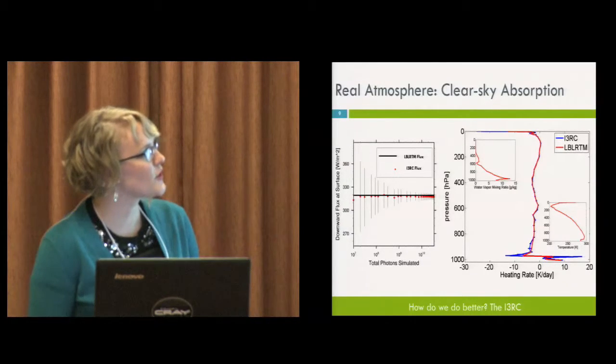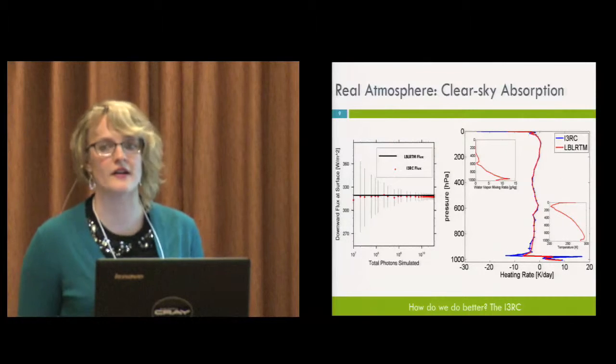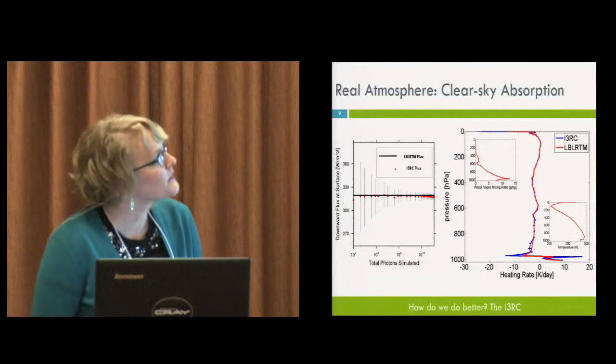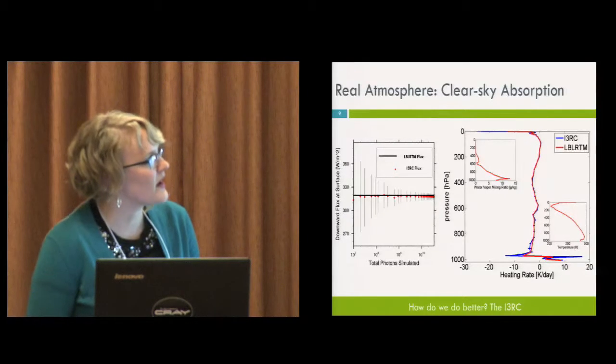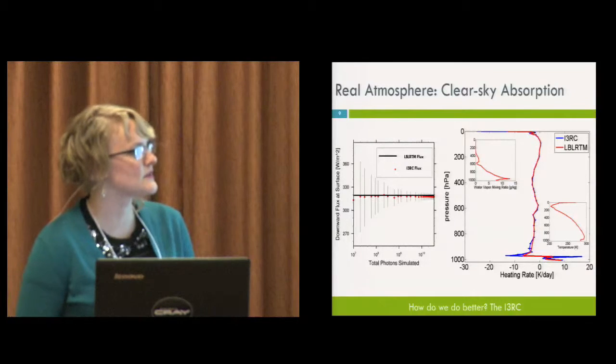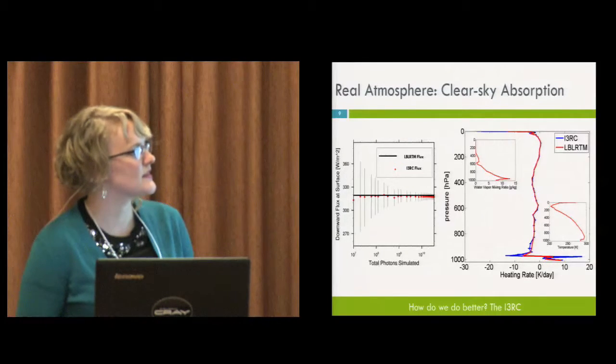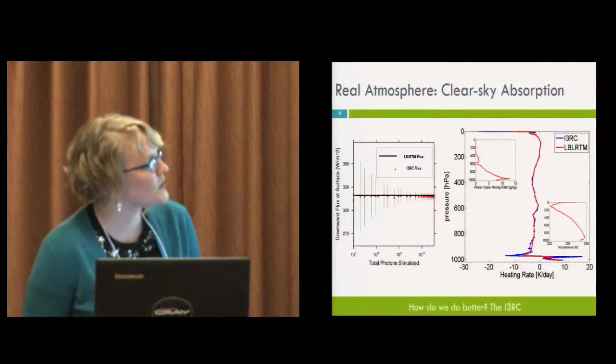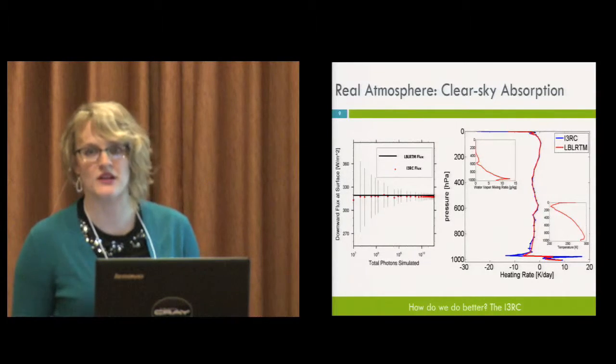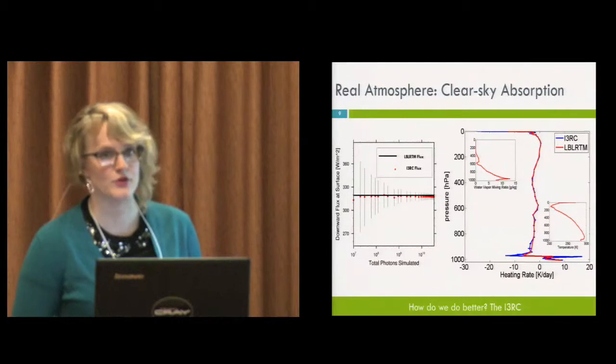On this side, what I'm showing is a vertical profile of atmospheric radiative heating rate. So the agreement is really good between the i3RC and the line-by-line model until we get down here near the surface.